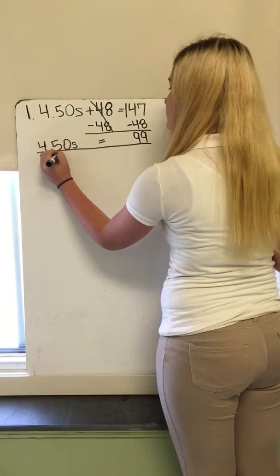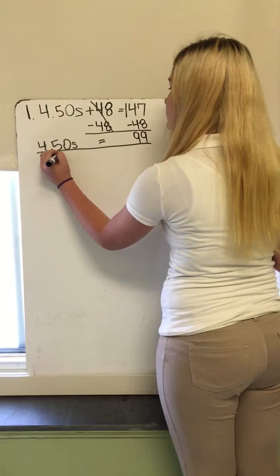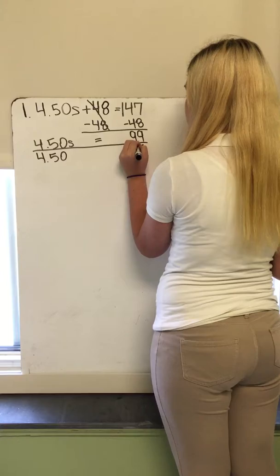So now you divide $4.50S by $4.50, and you divide 99 by $4.50.